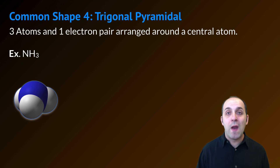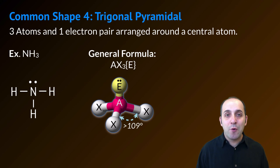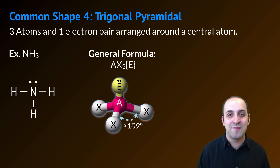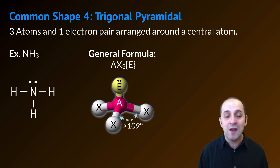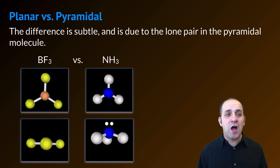Common shape number four is the trigonal pyramidal structure — this is when you have three atoms and one electron pair arranged around a central atom. A good example of this is ammonia. Here's the Lewis structure for ammonia. A trigonal pyramidal molecule always has the general formula AX3 with one lone pair of electrons on the central atom as well. Because of that lone pair, it pushes the three atoms into a pyramid-like shape, which is where this gets its name from. The bond angle between any two atoms in a trigonal pyramidal molecule is listed as less than 109 degrees.